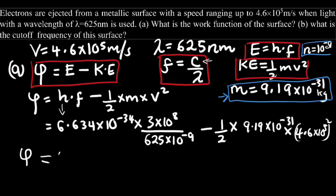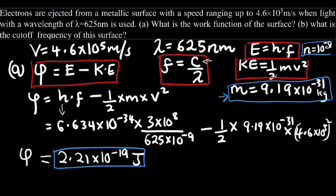If we calculate this, we get the work done as 2.21 times 10 to the power negative 19 Joules. Because these are photoelectrons and we are working with electrons, we will convert this to electron volts. To change it into electron volts, we multiply by 6.242 times 10 to the power 18.